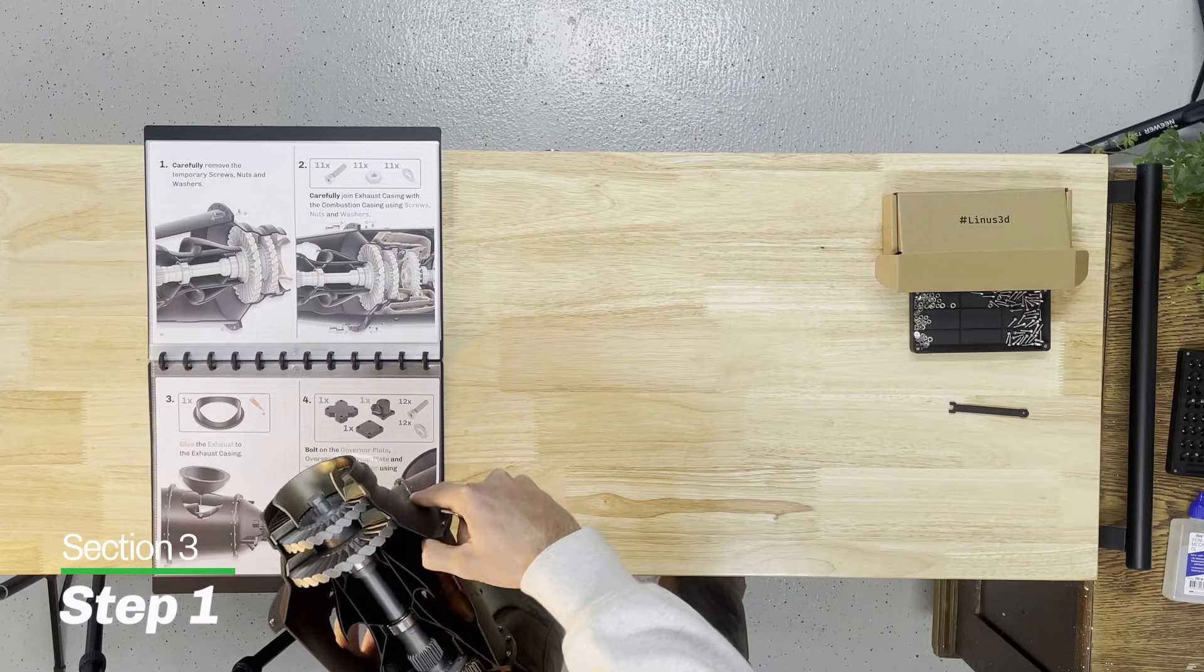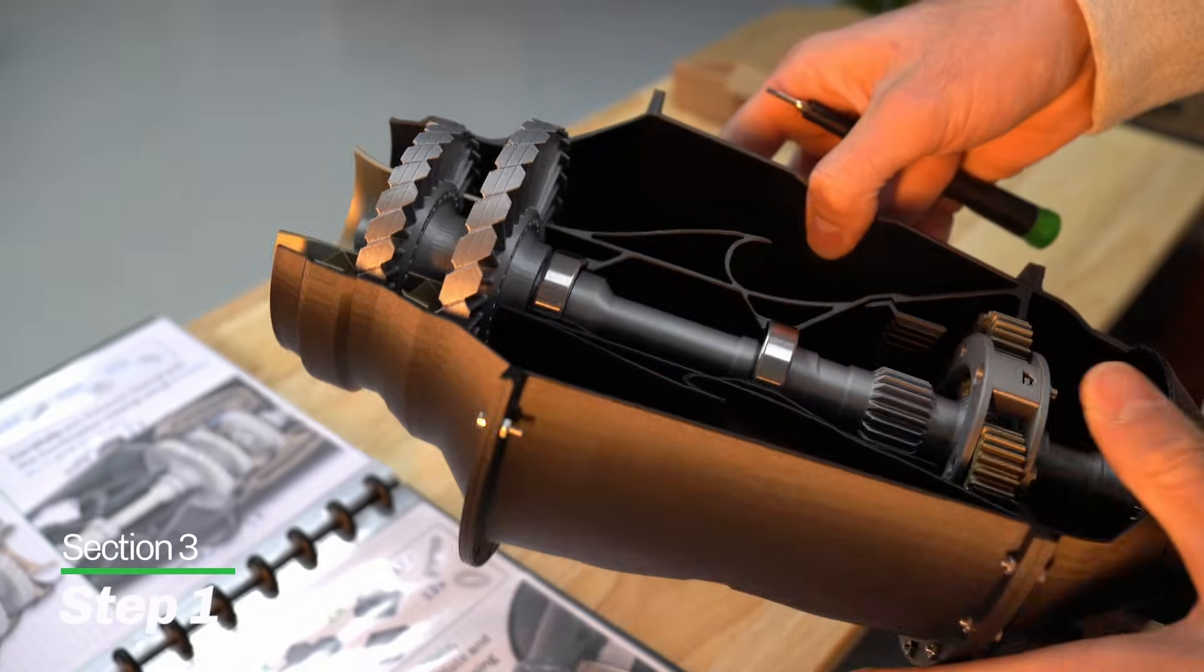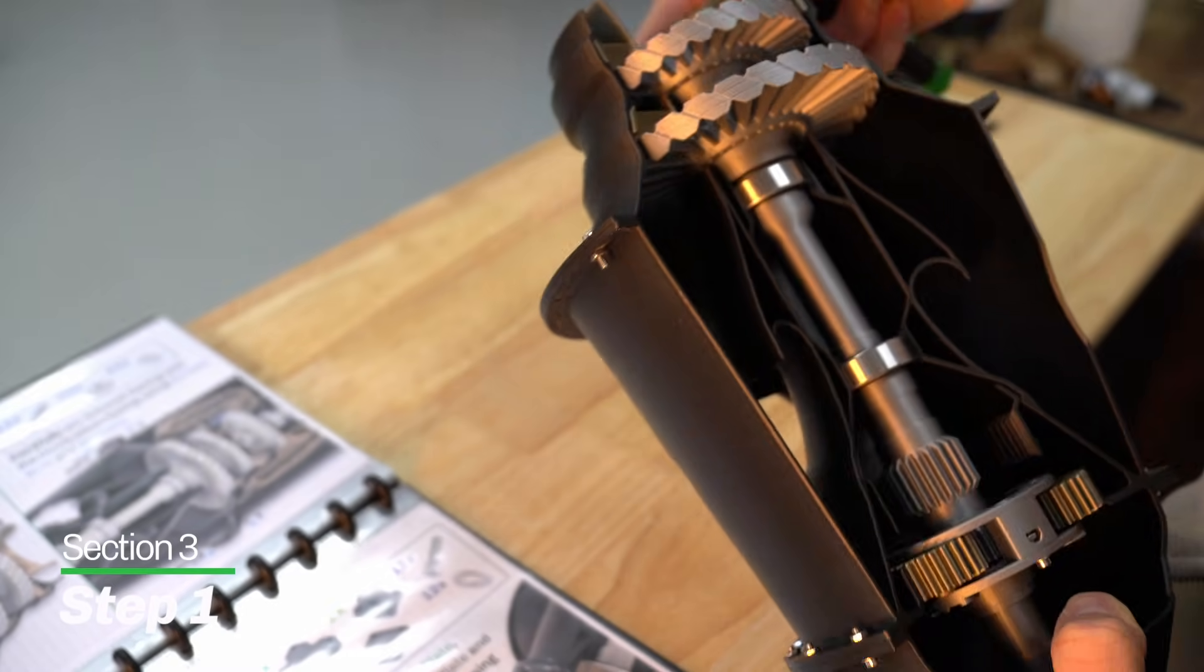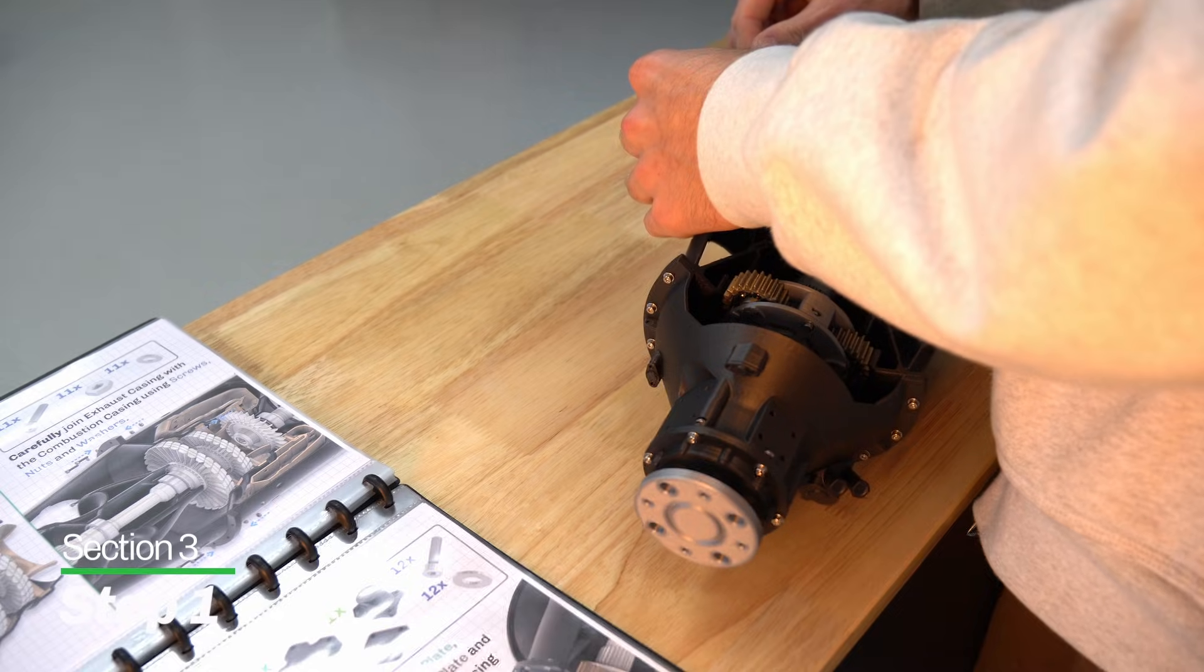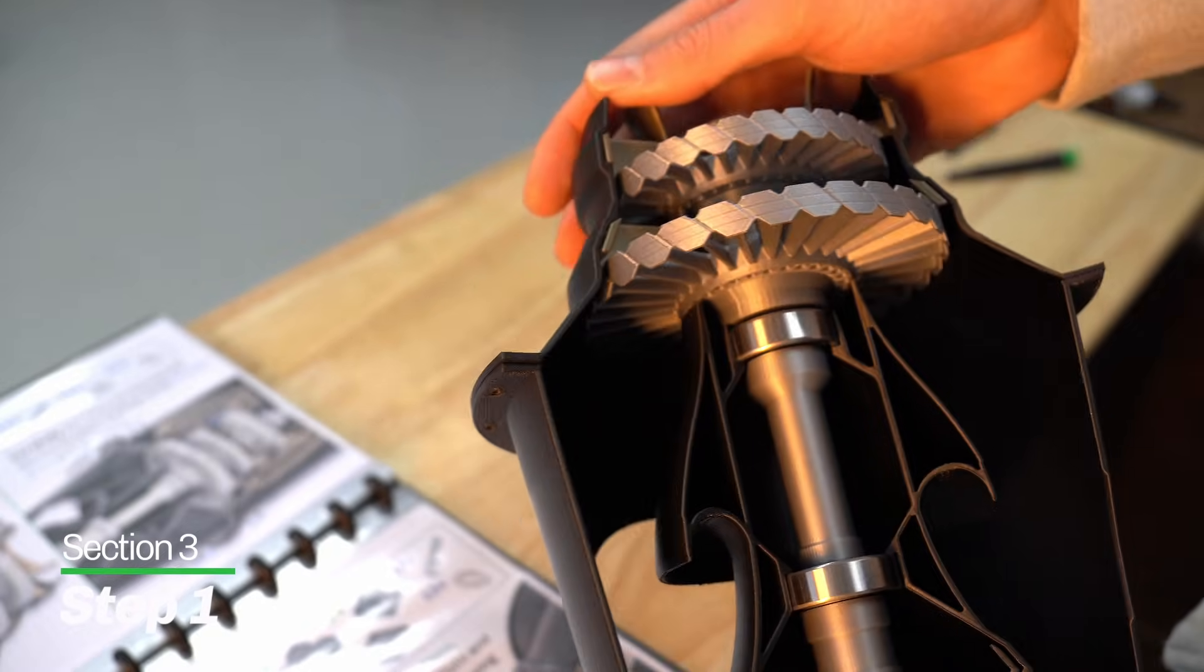The first thing we're going to do is remove the two temporary screws we put in earlier, connecting the exhaust casing to the turbine casing. Remove those carefully. And we're just going to have it sit like this with no screws attached.